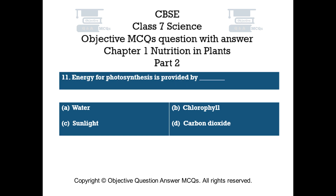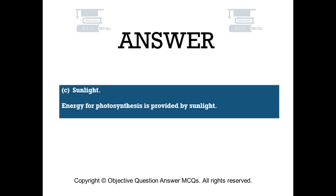Question number 11: Energy for photosynthesis is provided by. Option A: water. Option B: chlorophyll. Option C: sunlight. Option D: carbon dioxide. The right answer is option C — sunlight. Energy for photosynthesis is provided by sunlight.